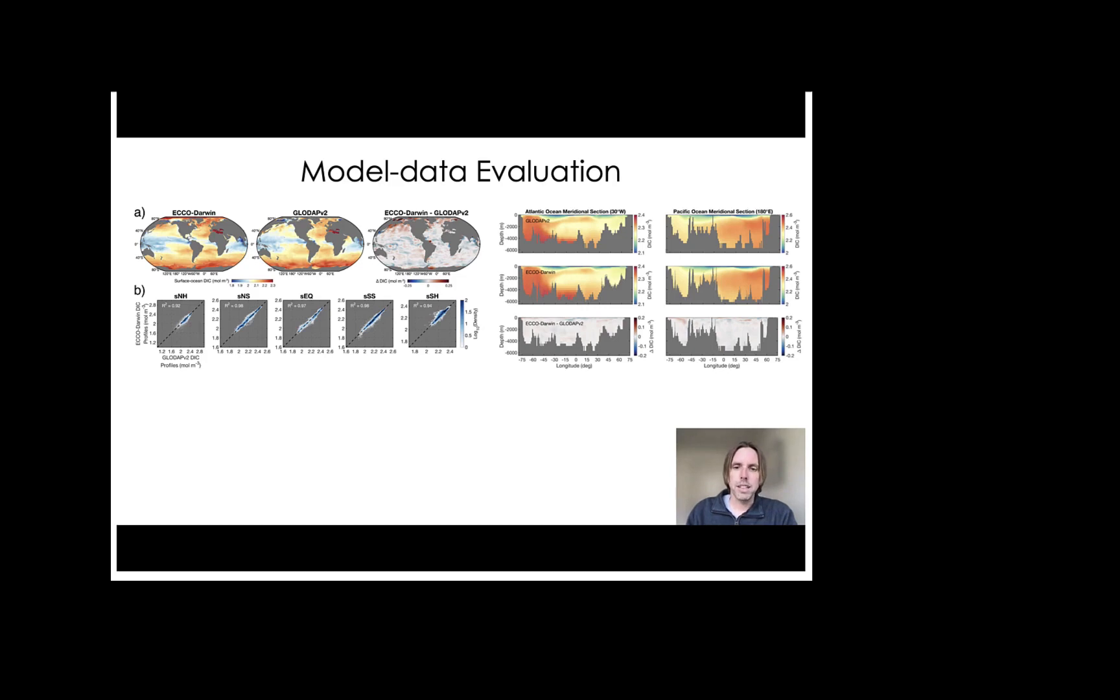And finally, the bottom figure shows a comparison of globally integrated air-sea CO2 flux from Jena CarboScope, MPI-SOM-FFN, and ECCO-Darwin. And ECCO-Darwin generally captures the magnitude and the trend of the global ocean carbon sink.